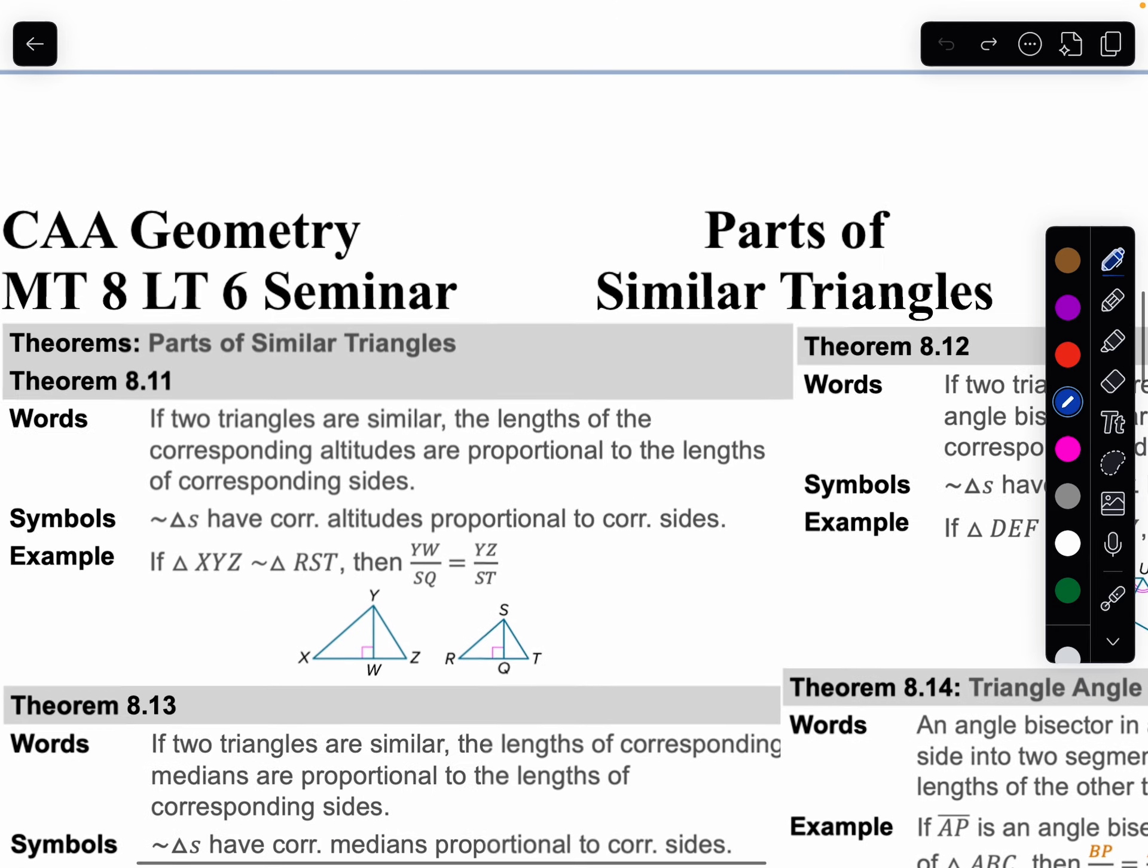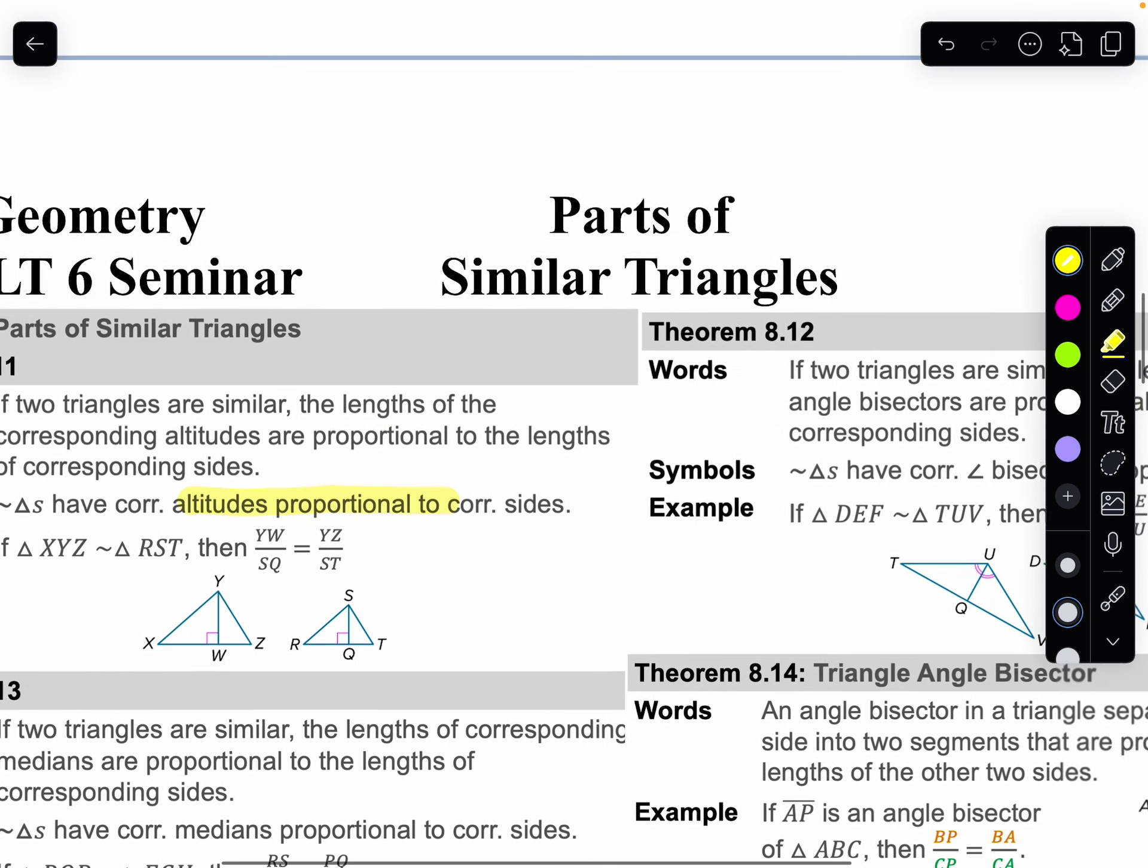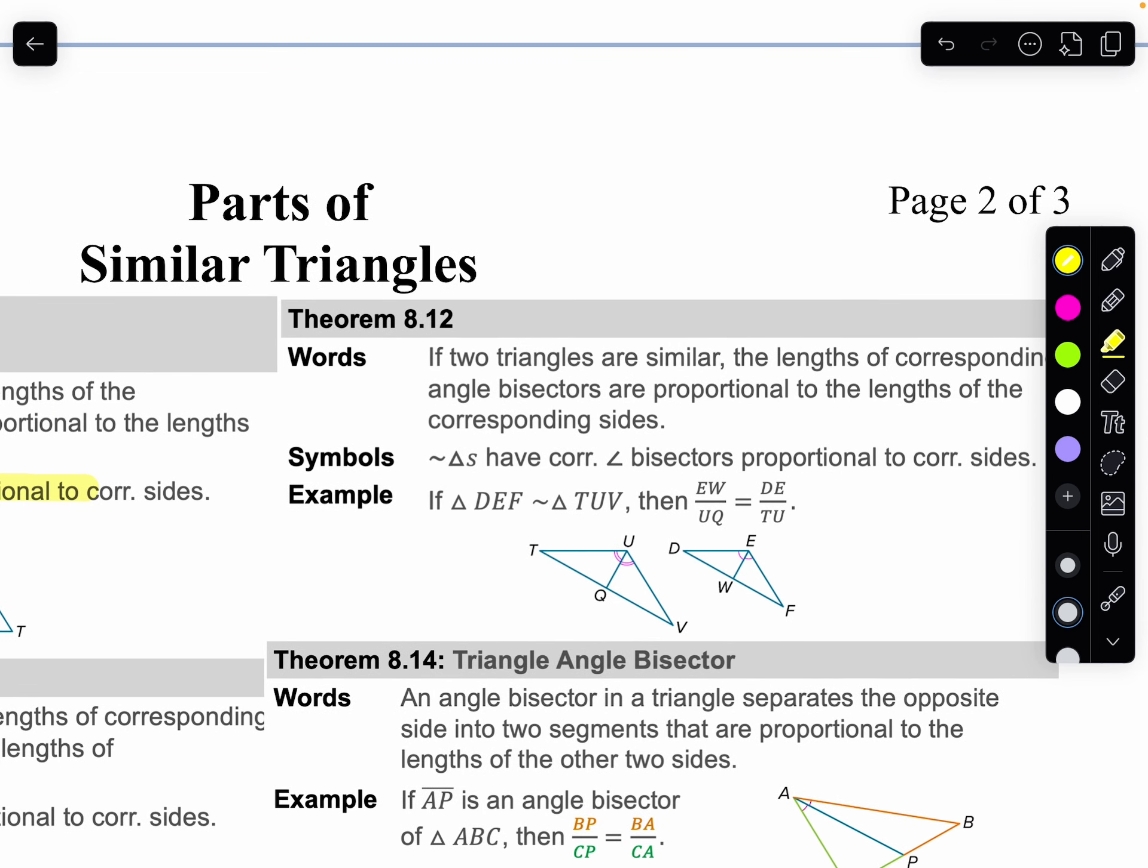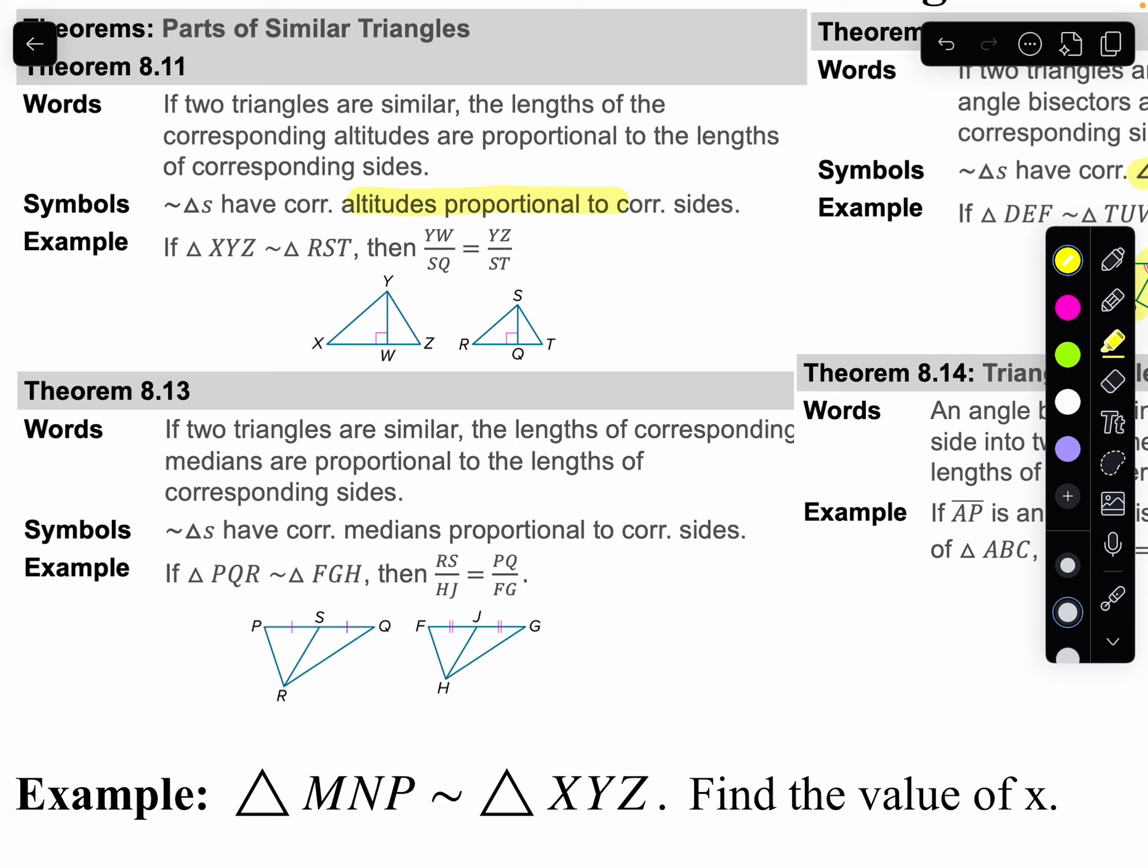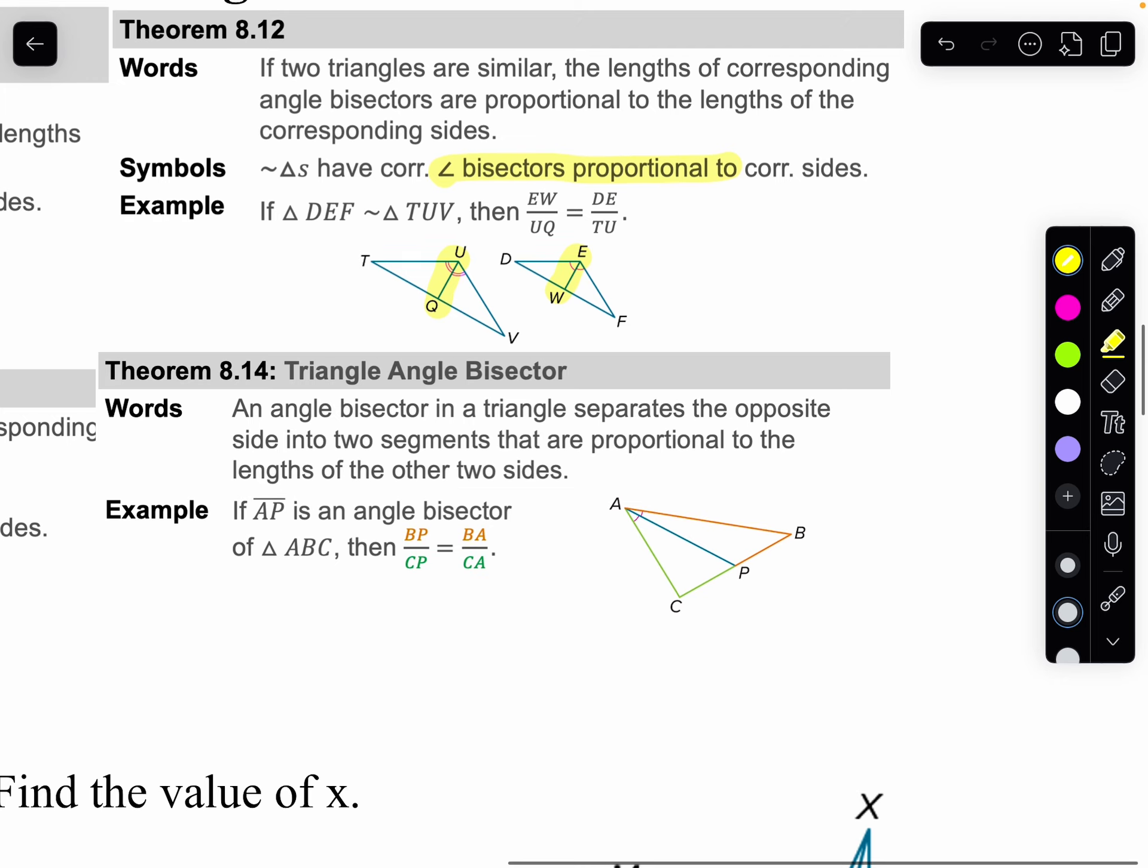First thing, if you have similar triangles, or similar shapes I should say, we know the altitudes are proportional. We could have done that yesterday on that deck problem. We also know that the angle bisectors are proportional. Now, the angles themselves aren't proportional. We're talking about the lengths are proportional. And we know the medians are proportional. Pretty much every segment that we can think of is going to be proportional.